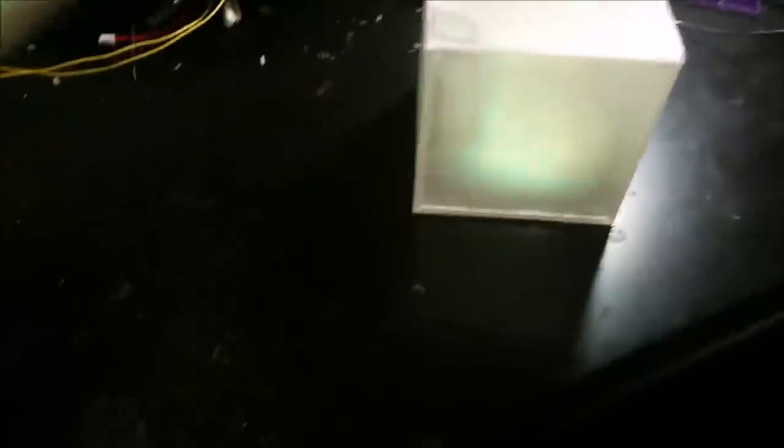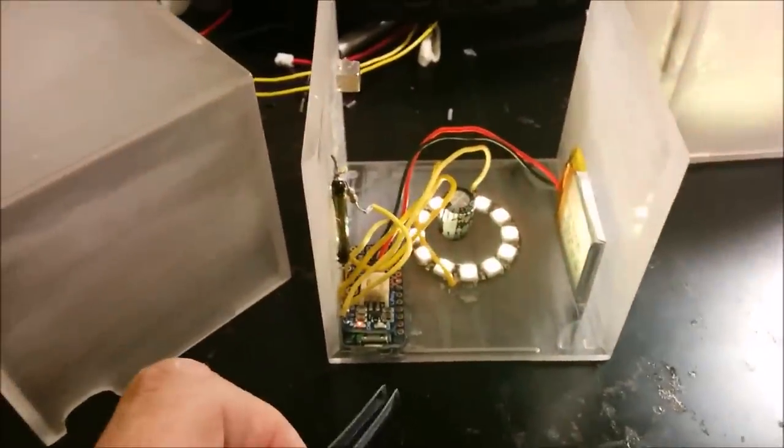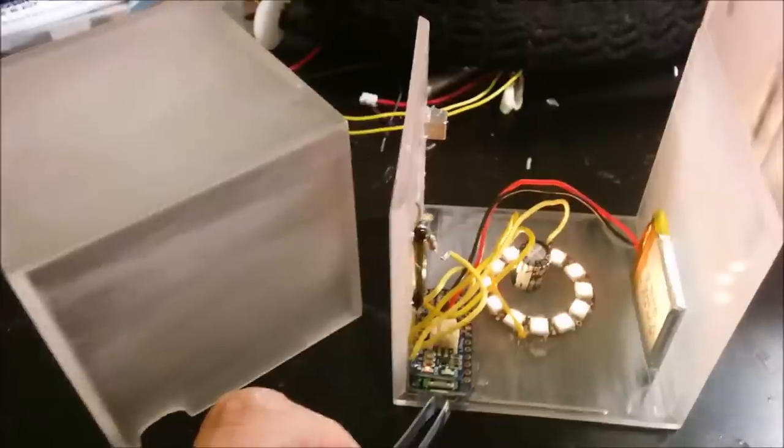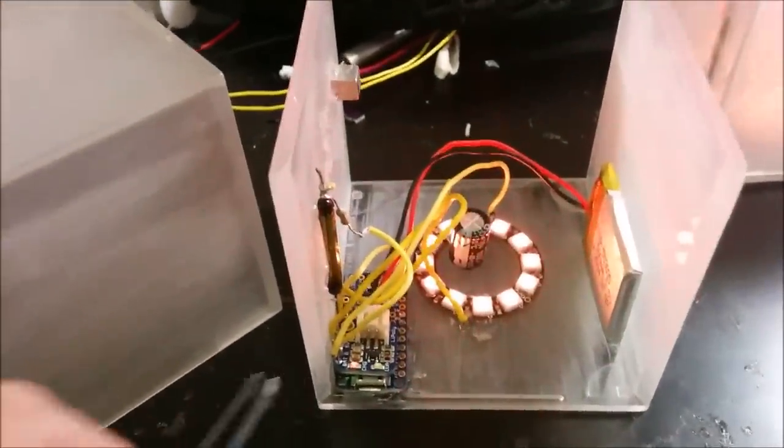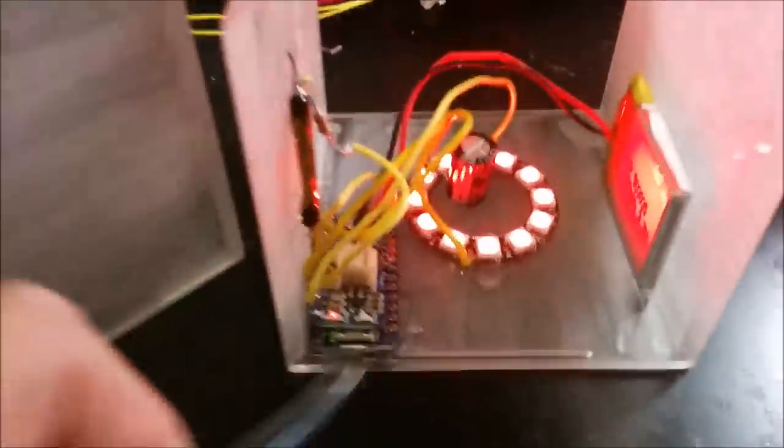Let's take a look inside one of them. All right, here I've taken one of the cubes apart so we can take a look at the innards. The casing is just a baseball display case that I sanded down to give it a nice fuzzy, glowy effect.